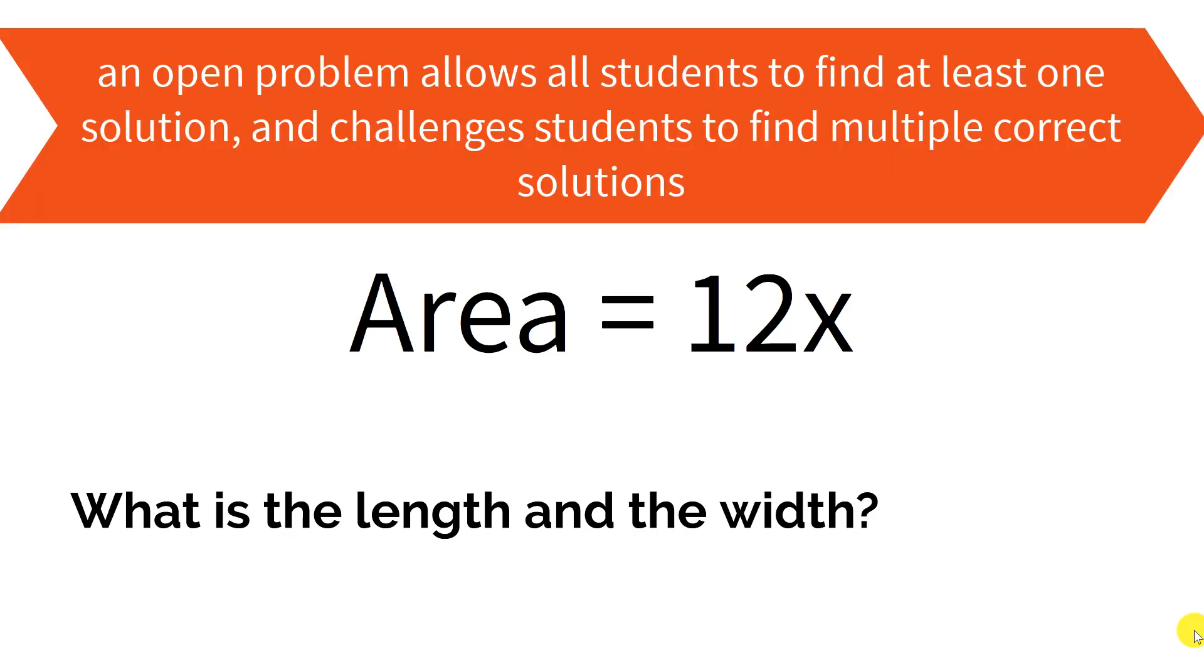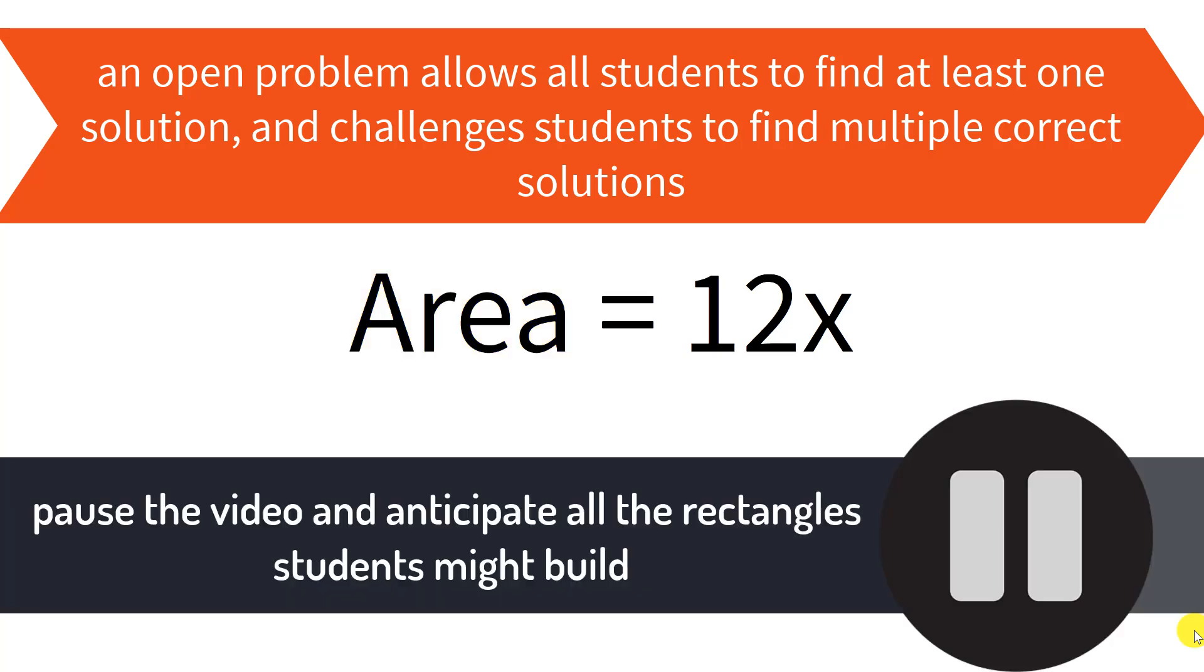We might want to go backwards now. So we might give an area to students and ask them to build a rectangle and find out what the length and width are. An open problem like 12x is great because we're going to see lots of correct answers here.